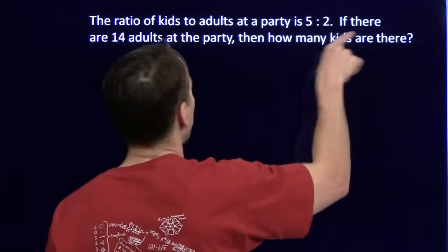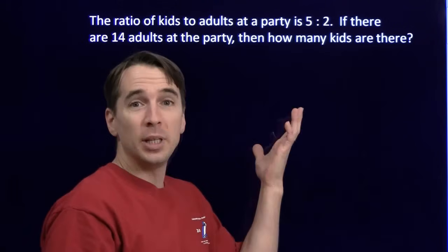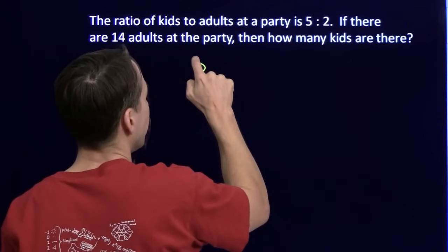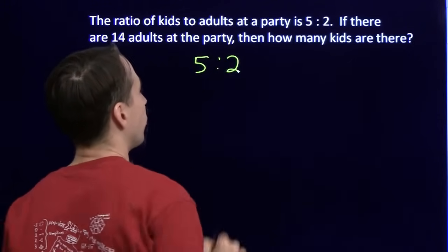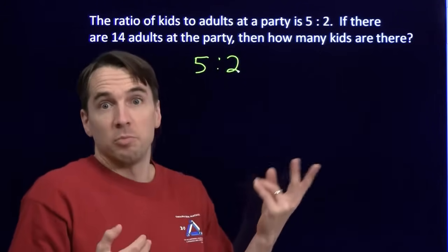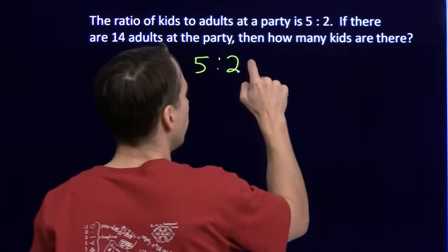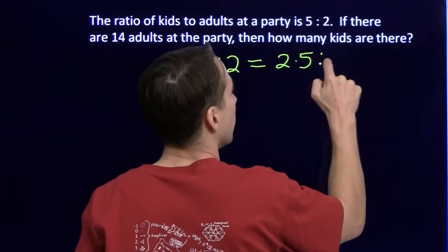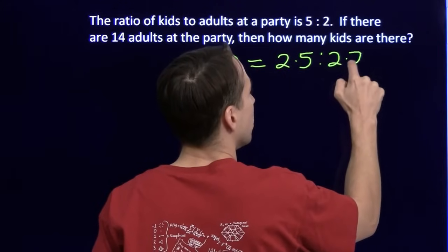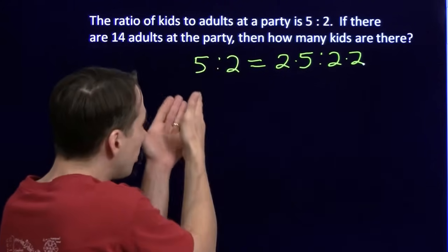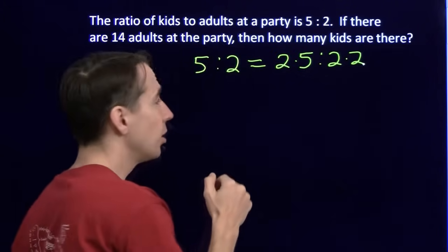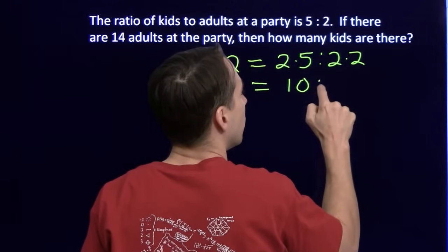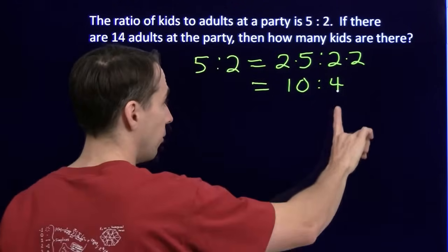Let's read the rest of the problem. It says, if there are 14 adults at the party, then how many kids are there? Our ratio tells us we have 5 kids for every 2 adults. We could just have 5 kids and 2 adults, or we could have 2 of those groups. If we had 2 of those groups, we'd have 2 times 5 kids and 2 times 2 adults — we're multiplying each component of the ratio by 2 — giving us 10 to 4: 10 kids, 4 adults.